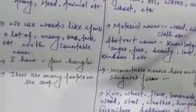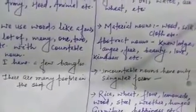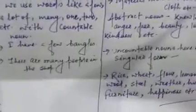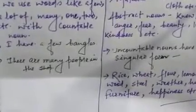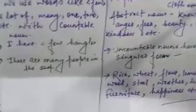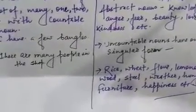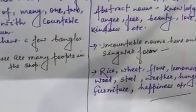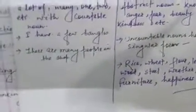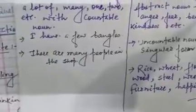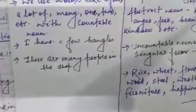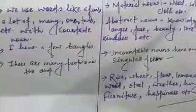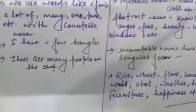One important point to note is that uncountable nouns have only singular form. Examples: rice, wheat, flour, lemonade, wood, steel, weather, hunger, furniture, happiness — these all exist only in singular form. They may be plural in nature, but they are always written in singular form.